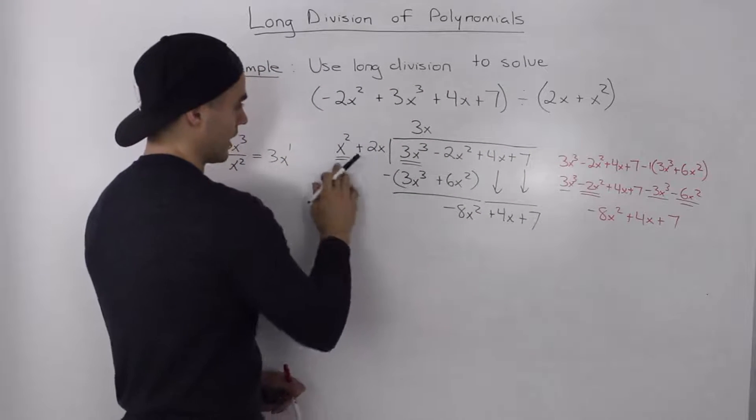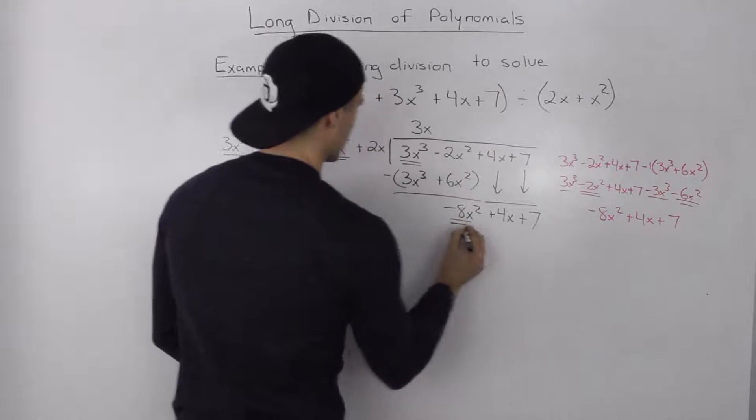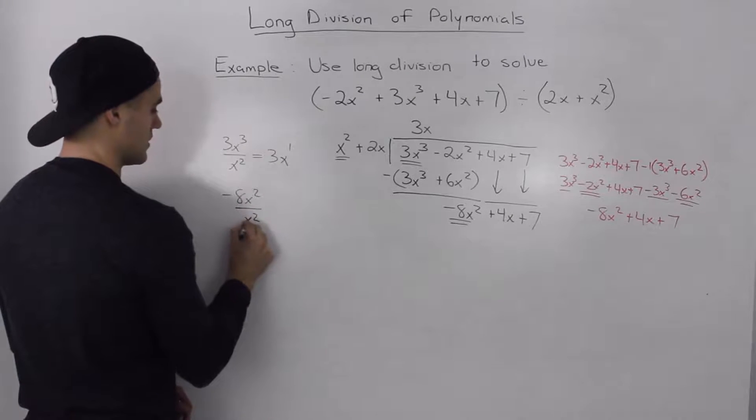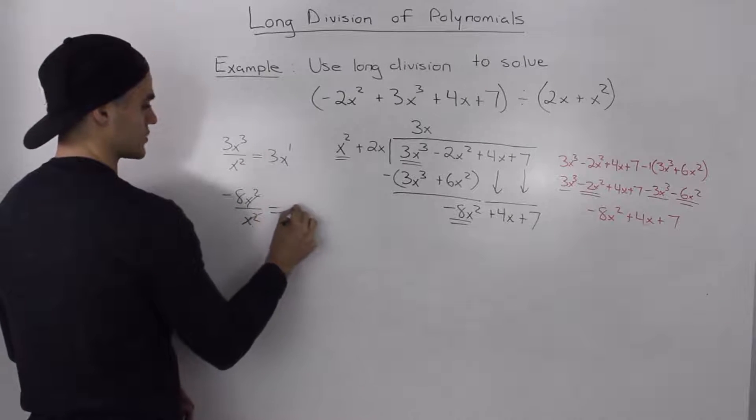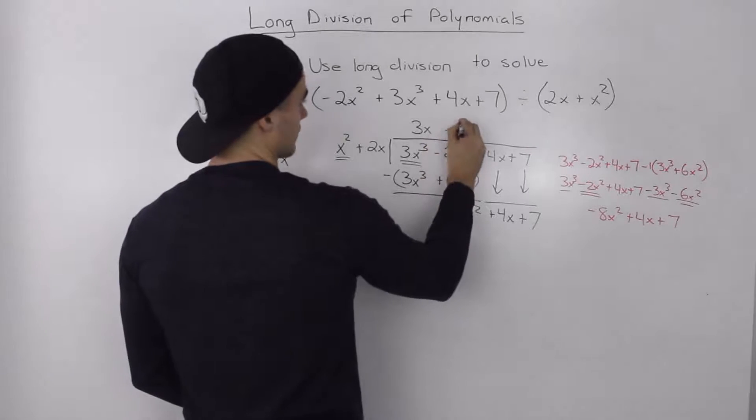Next step, we find out how many times can x squared go into negative 8x squared. So if we do that on the side, negative 8x squared divided by x squared. Well, the x squared will just cancel out and we just end up with negative 8. So negative 8 goes here.